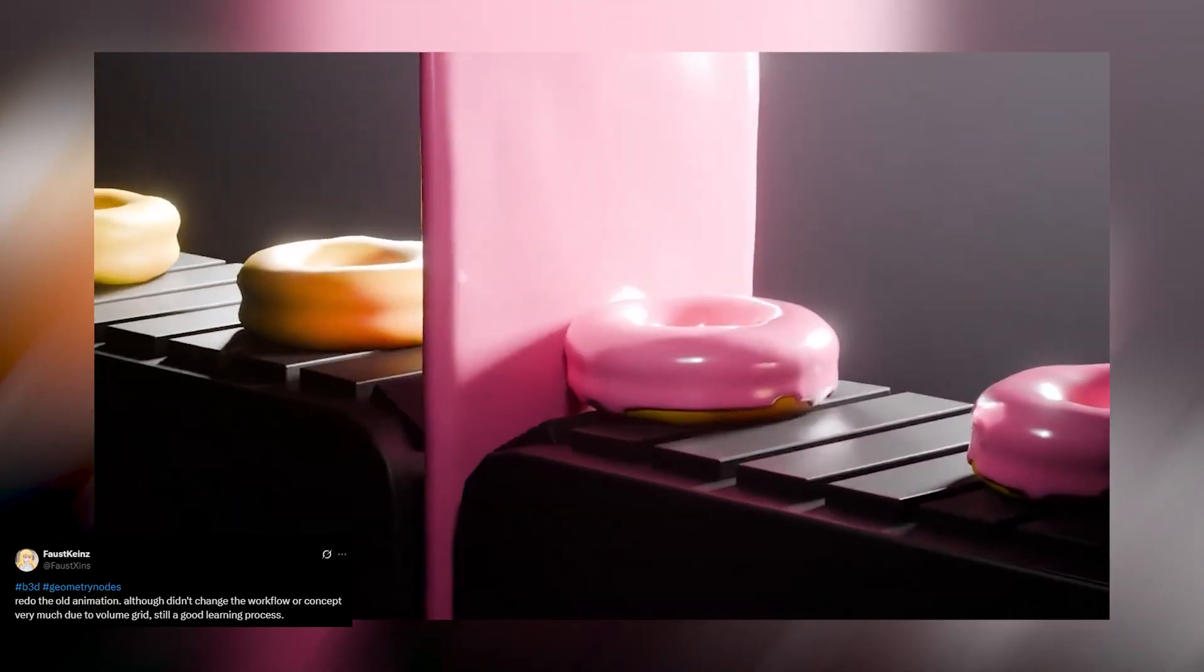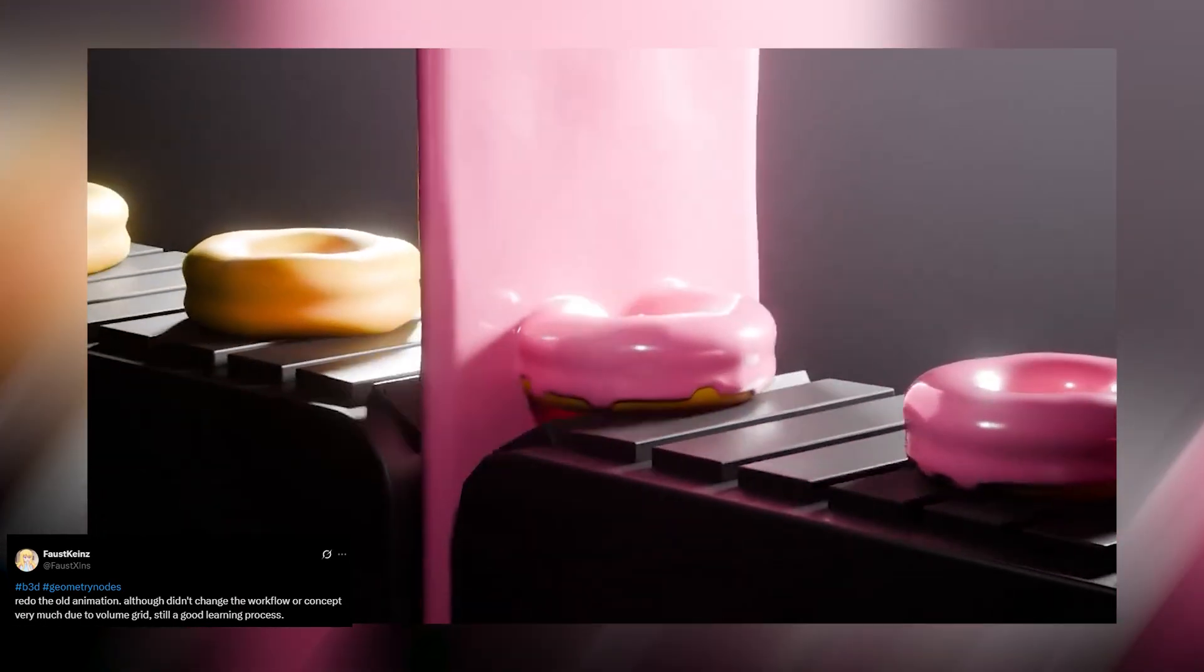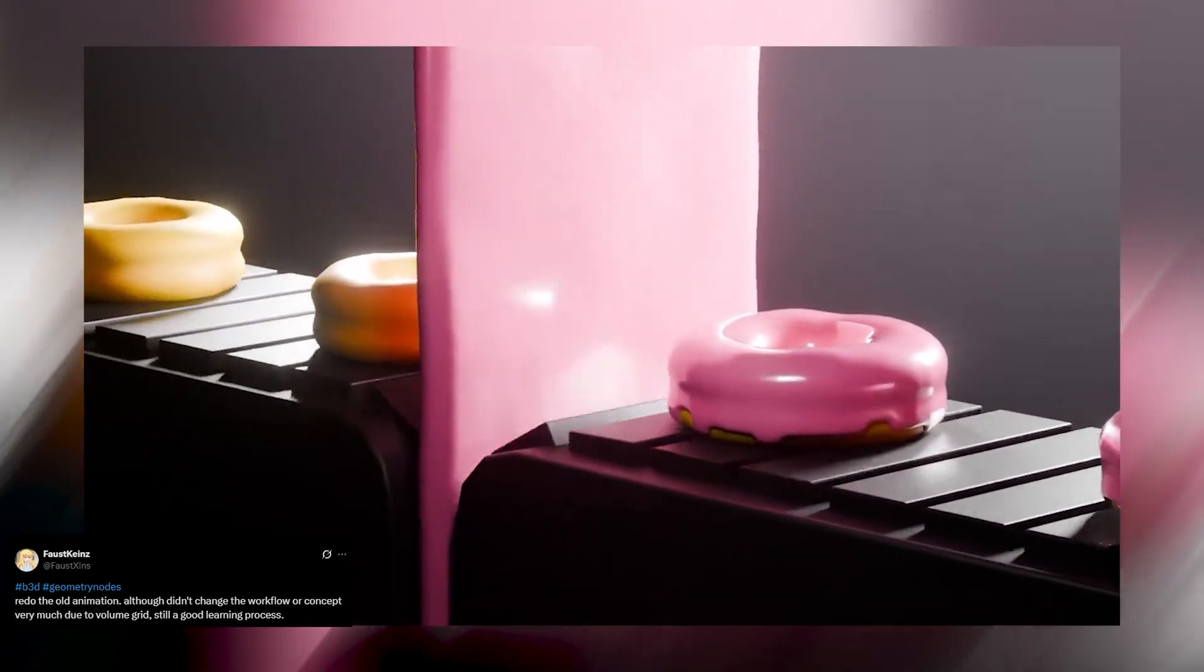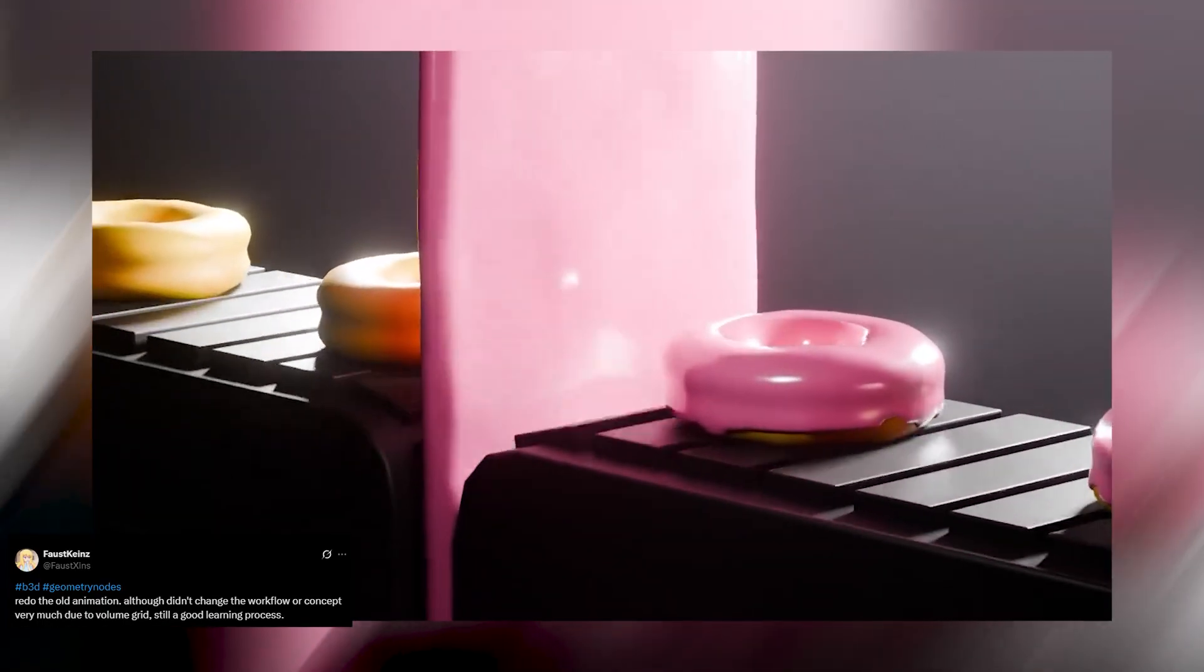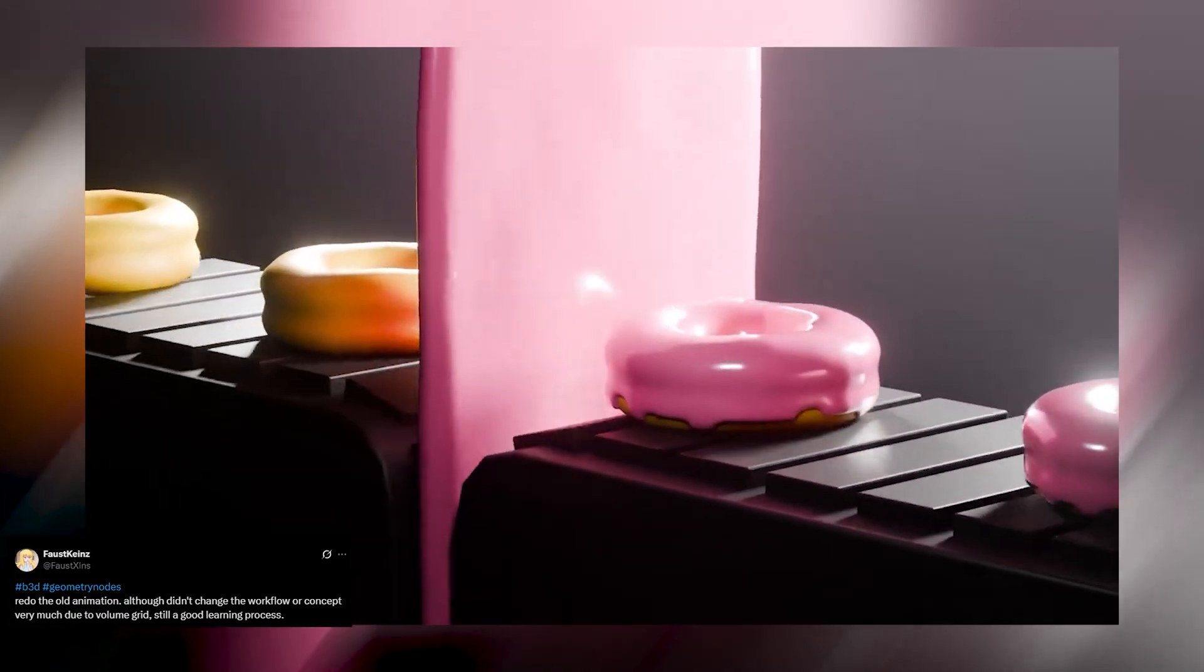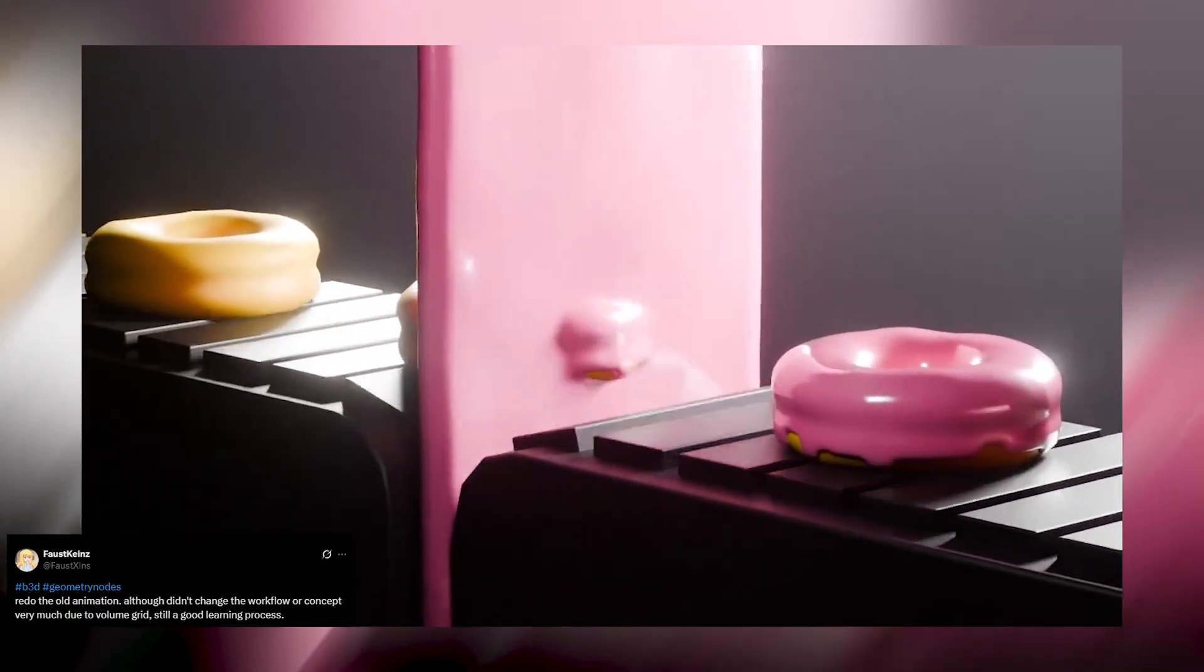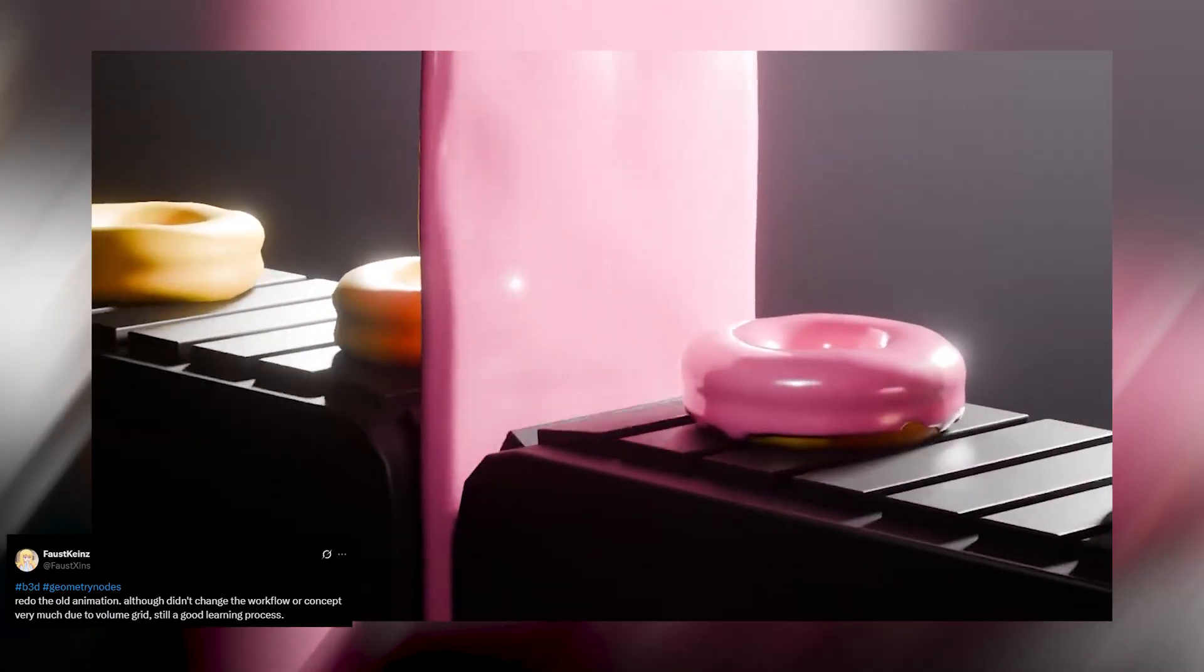Finally, Geo Nodes can fake effects that would normally require expensive simulations. Faustkanes made a creamy, fluid-like effect that, without Geo Nodes, would require either a full fluid sim or dynamic paint. Fluid sim would be messy and slow, and dynamic paint only gives you a mask. With Geometry Nodes, you get full control, thickness, and performance, all without touching the simulation tools.